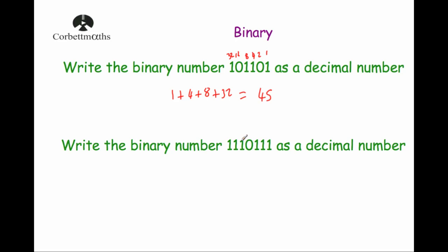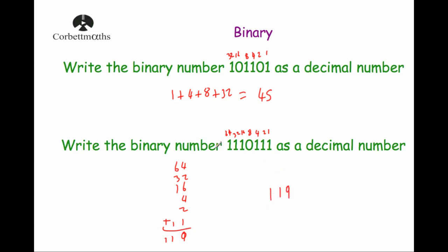For our last question, the binary number 1110111: writing place headings 1, 2, 4, 8, 16, 32, 64 above it — we're adding 64 + 32 + 16 + 4 + 2 + 1. Adding those together: 4 + 2 + 1 = 7, then 16 gives 23, 32 gives 55, 64 gives 119. So the binary number 1110111 as a decimal number is 119. And that's it.